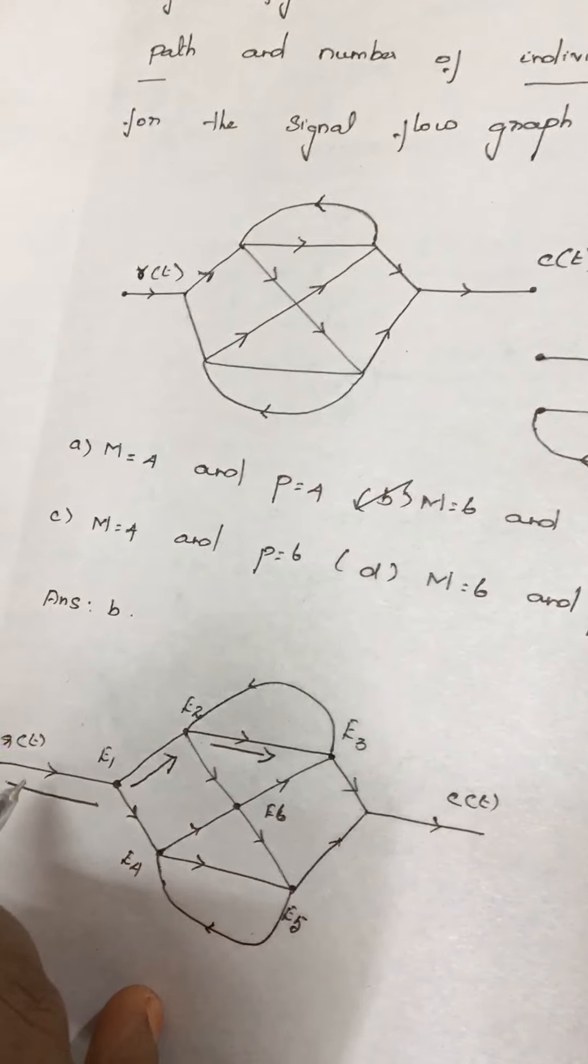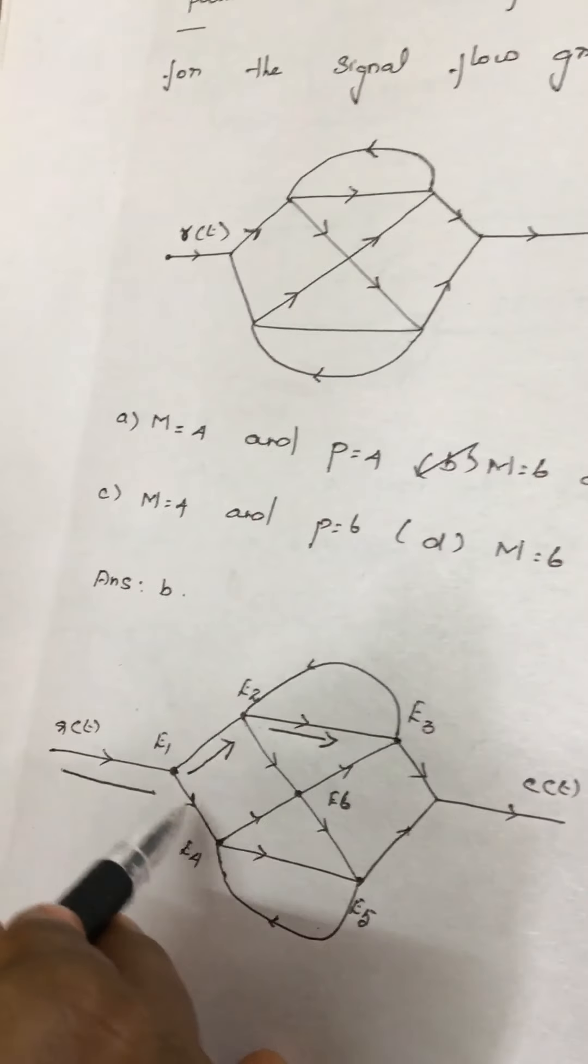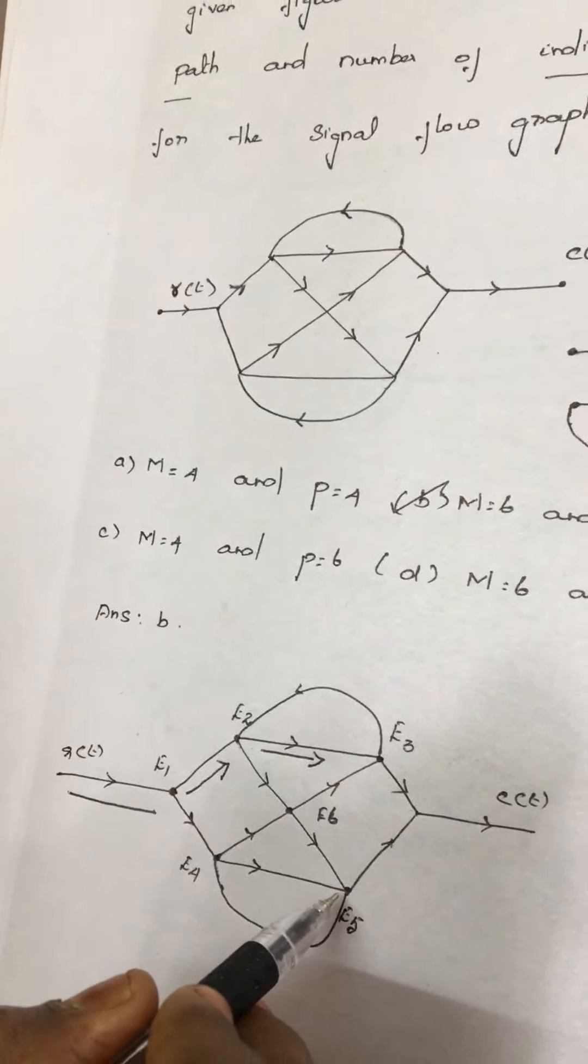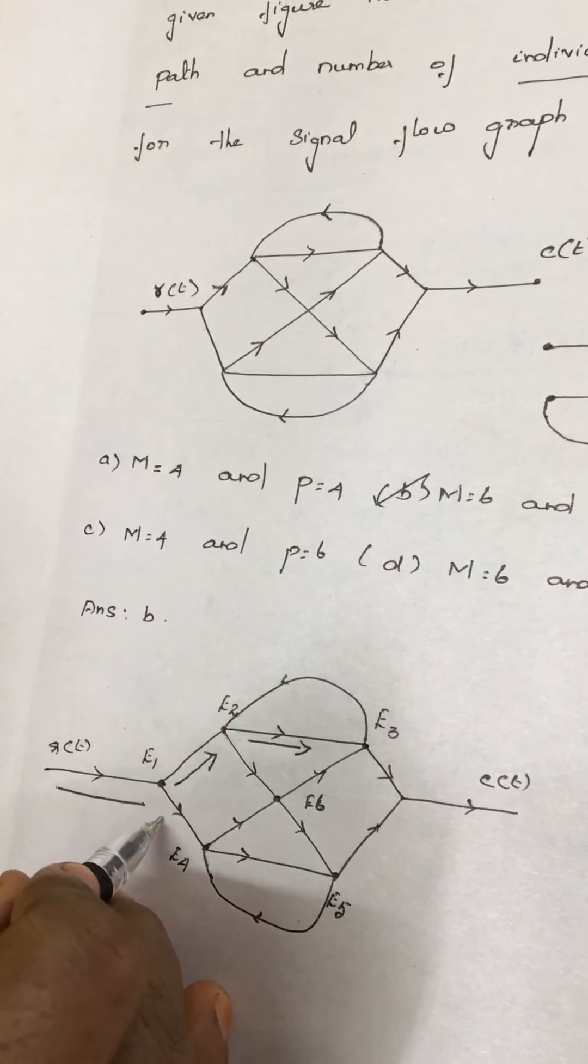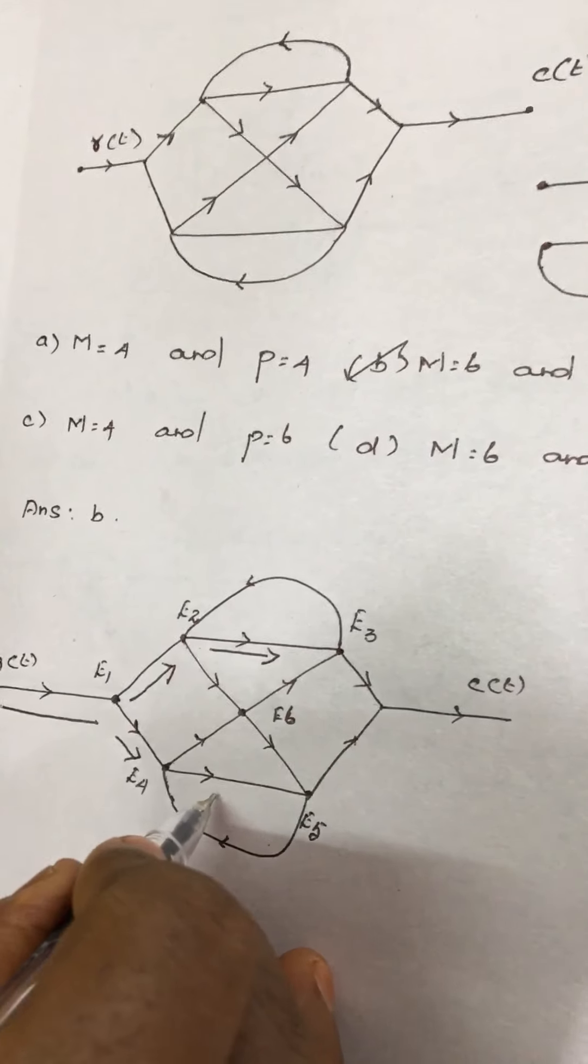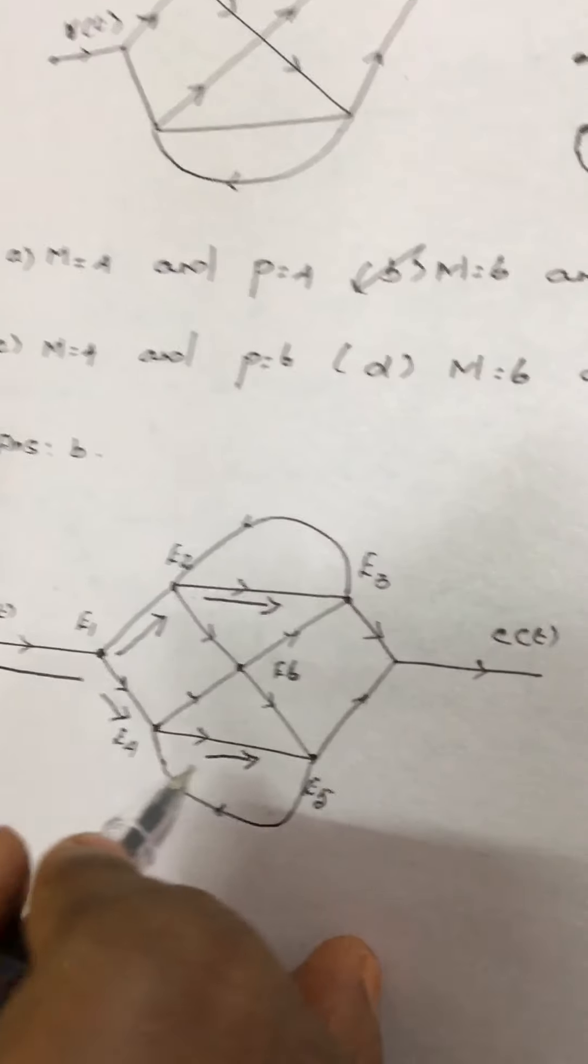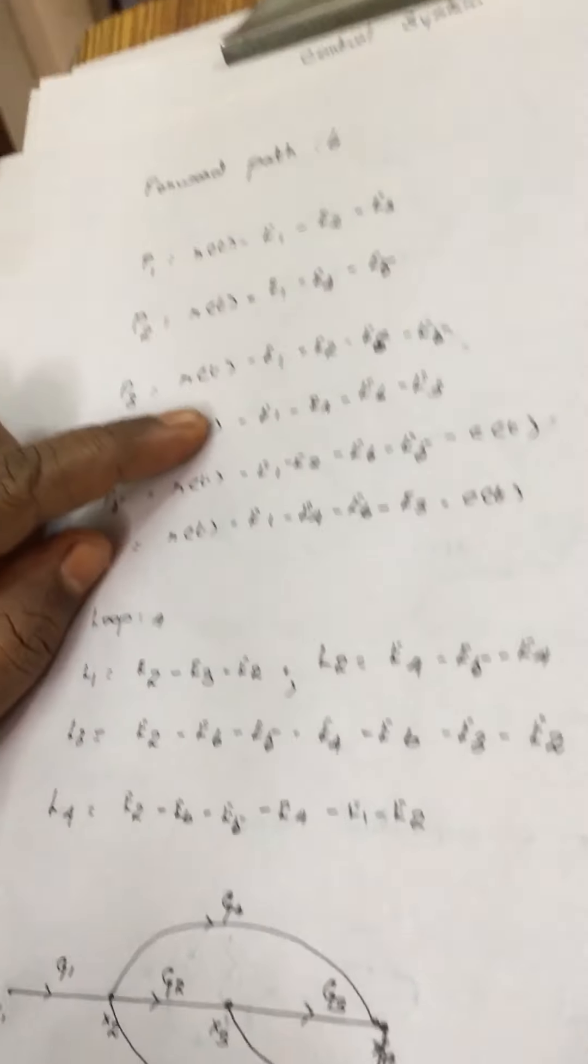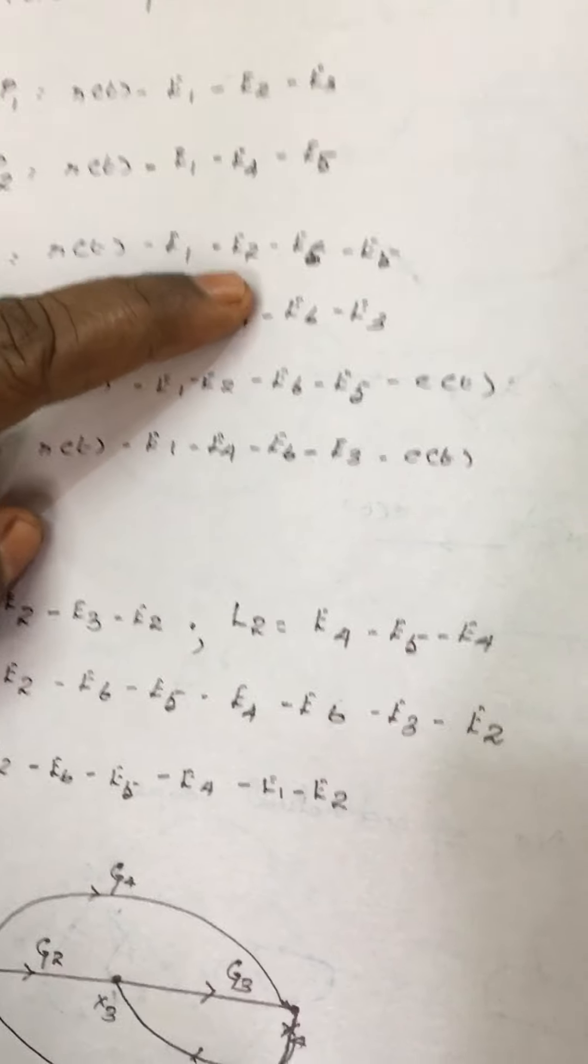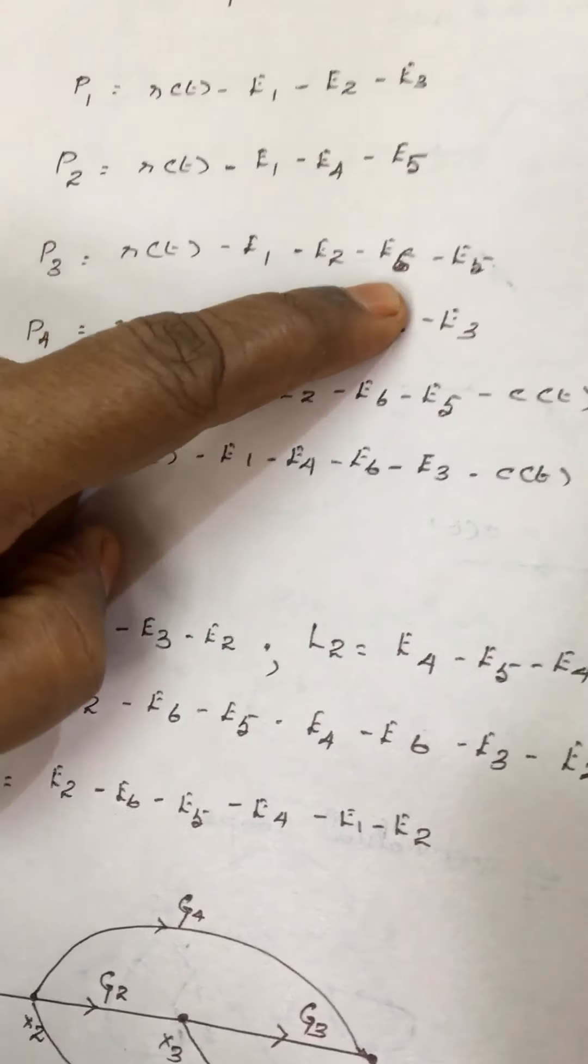As I said earlier, the forward path starts from one point and ends at one node. So next forward path is R of T, E1, E4, and E5. This is one forward path. And next is P3: R of T, E1, E2, E6, E5.